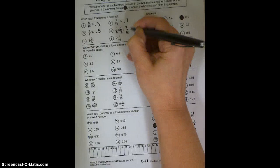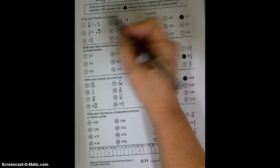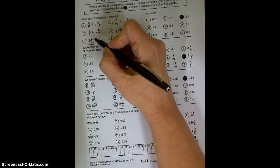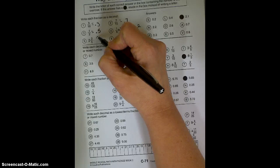And then 2 and 3 fifths, it's a little bit trickier. What we're going to do is multiply our denominator by our whole number and add the numerator. We've done this, but it's been a couple of weeks. So 5 times 2 is 10, plus 3 is 13, so this becomes 13 fifths.